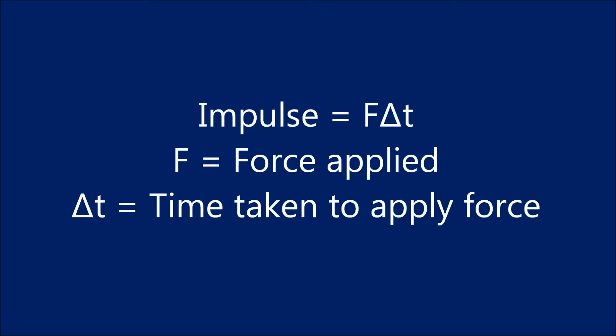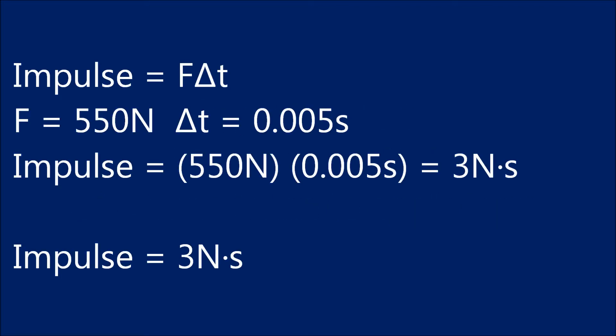Impulse equals F delta T, where F equals the force applied, and delta T equals the amount of time it took to apply the force. By plugging the numbers previously stated into the impulse formula, we can solve for the impulse on the golf ball, which happens to be three newton seconds.